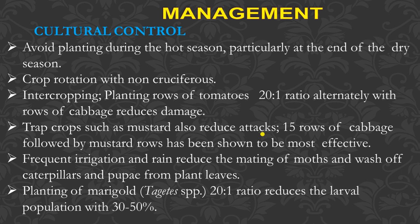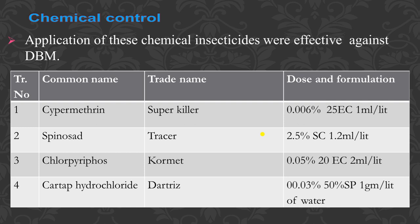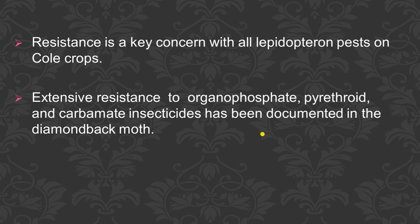For biological control, we can use larval parasitoids such as parasitic wasps Cotesia plutellae. Egg parasitoid Trichogramma can be used. Entomopathogenic fungi and entomopathogenic nematodes can also be used, and their suspensions should be sprayed. Chemical insecticides such as cypermethrin, spinosad, and chlorpyrifos hydrochloride can be sprayed at the recommended dose.